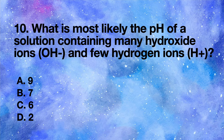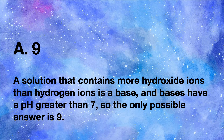What is most likely the pH of a solution containing many hydroxide ions (OH⁻) and few hydrogen ions (H⁺)? A 9, B 7, C 6, D 2. Answer: A 9. A solution that contains more hydroxide ions than hydrogen ions is a base, and bases have a pH greater than 7, so the only possible answer is 9.